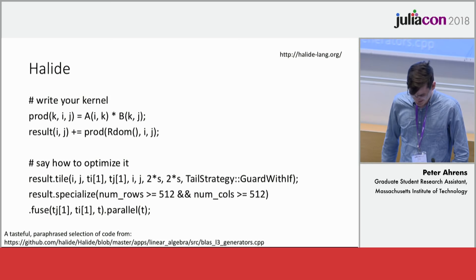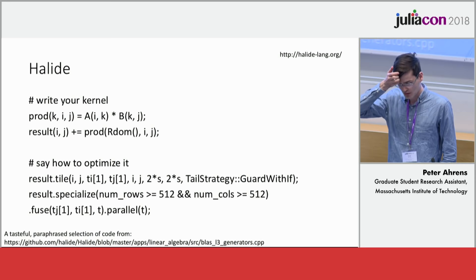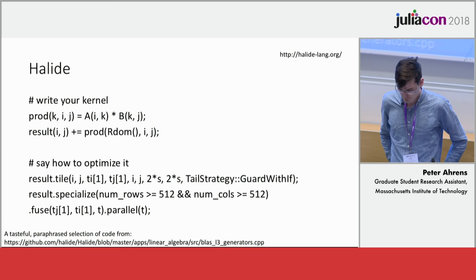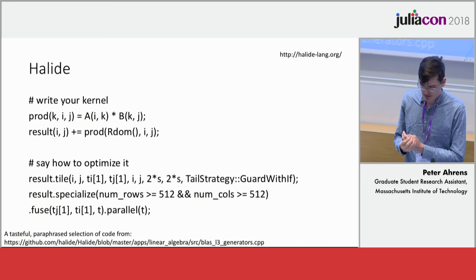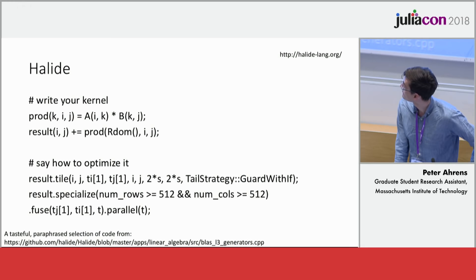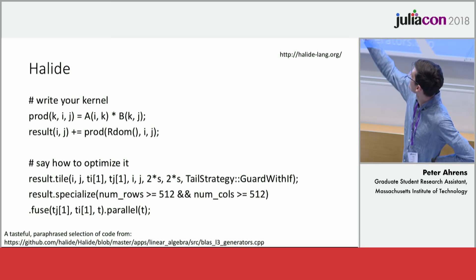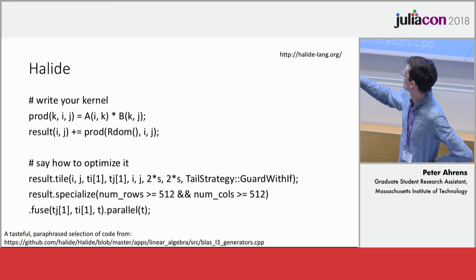Halide is a really cool project — I think it's used in production at Google. The big contribution of Halide is that it separates the description of the kernel from the schedule. You'd say here's our matrix multiply product and we're going to accumulate the result. Then you say how to optimize it: I want to tile the iterations, I want to specialize, and I want to fuse.